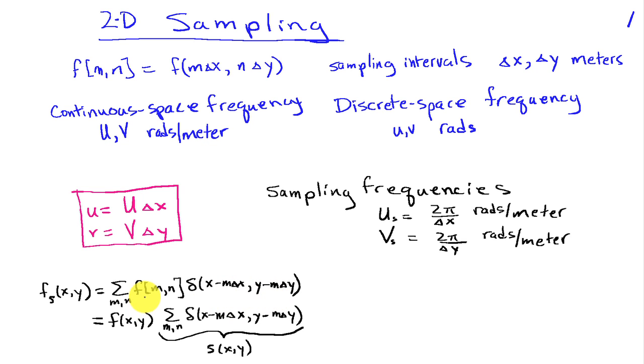This can be written as the product of f of x, y times this impulse train in two dimensions. This is exactly what we did in one-dimensional sampling theory. So we have a representation now for the sampled signal f sub s that's expressed in terms of the original signal f of x, y times this impulse train, which I've denoted as s of x, y.